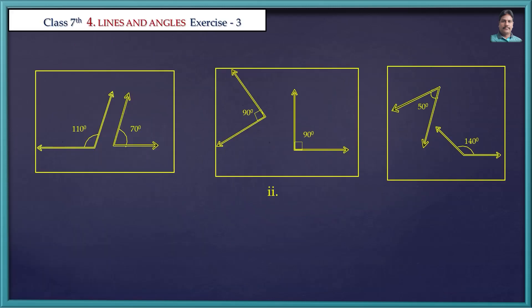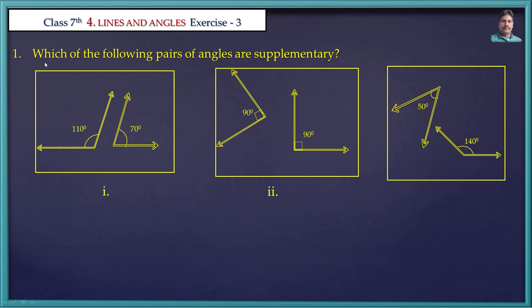First problem: Which of the following pairs of angles are supplementary? See the first figure. 110 degrees and 70 degrees are given.